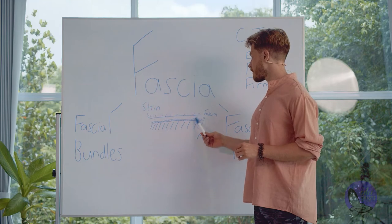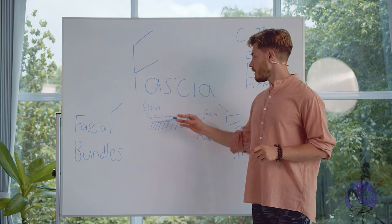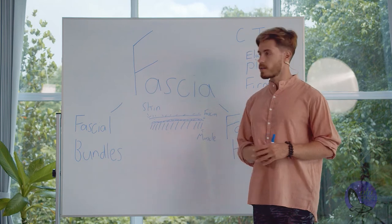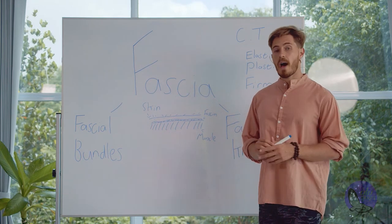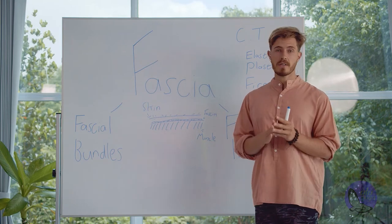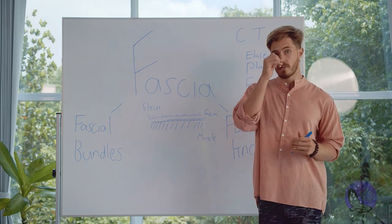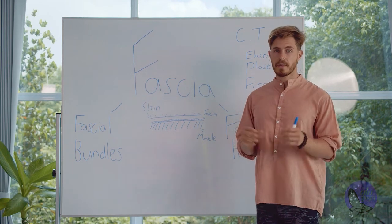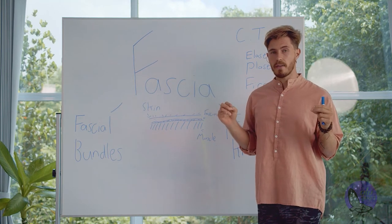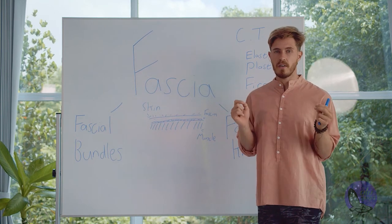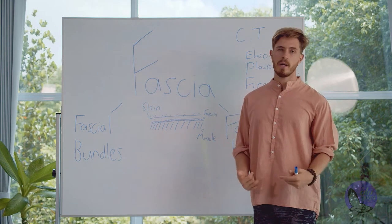Even though I showed you skin, fascia, and muscle, fascia is also in the skin and in the muscle — it goes through everything. What wraps around muscle fibers is fascia. If you know what a sausage looks like, the fascia is like the skin of the sausage that wraps itself around it, and it runs through our entire body.